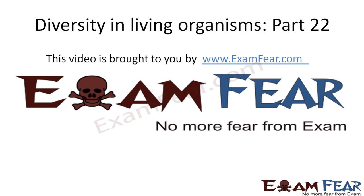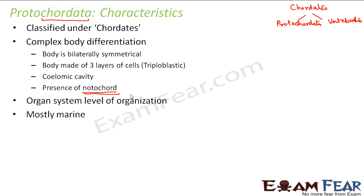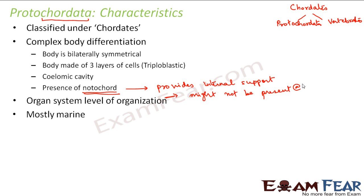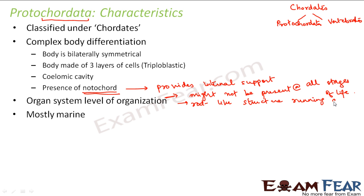Hello friends, this video on diversity in living organisms part 22 is brought to you by ExamFear.com — no more fear from exams. So we can see what advantage we get due to the presence of the notochord: it provides internal support. It might not be present at all stages of life, but it is seen sometimes during the lifetime of the protochordate. So what is a notochord? It is a rod-like structure running along the back.